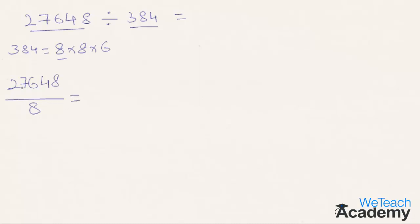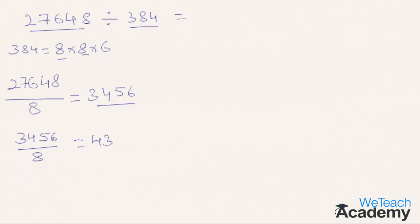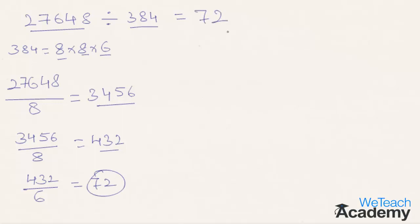27648 divided by 8: 8 threes is 24, 8 fours is 32, 8 fives is 40, 8 sixes is 48. The result for 27648 divided by 8 is 3456. Now 3456 is to be divided by the next factor, that is 8 again. 3456 divided by 8 gives 432. Now 432 is to be divided by the third factor, that is 6. 432 divided by 6 gives 72. So the final result for 27648 divided by 384 is 72.